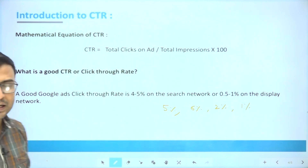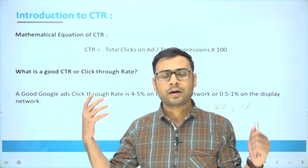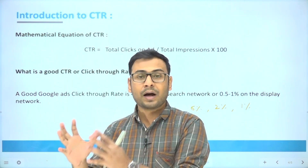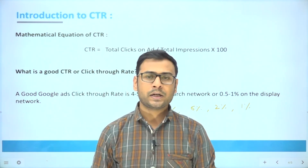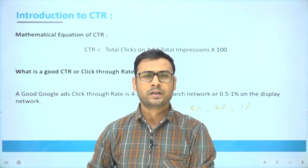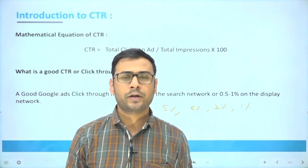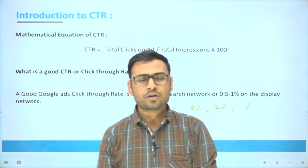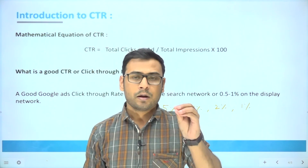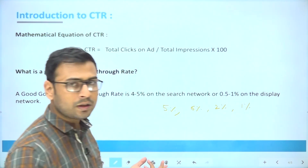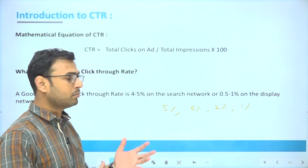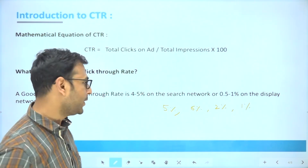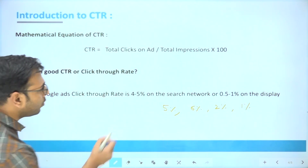There are standards, but they are industry-wise and also vary by ad type. The benchmark for search ads is totally different from the benchmark for display ads. A good Google Ads CTR is around 4–5% on the search network. That is a good overall figure for search.